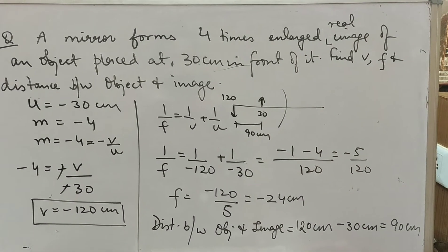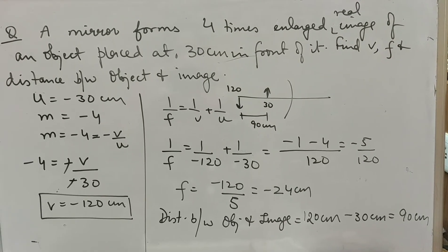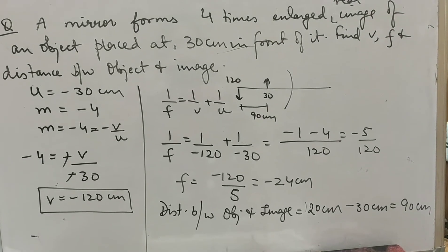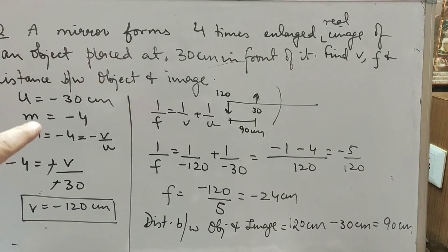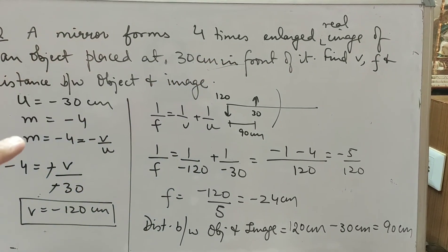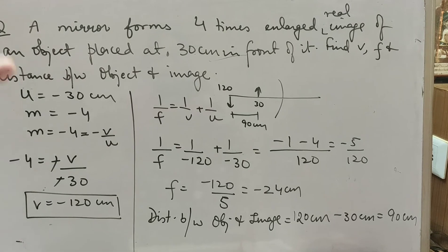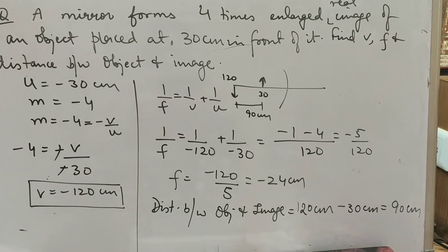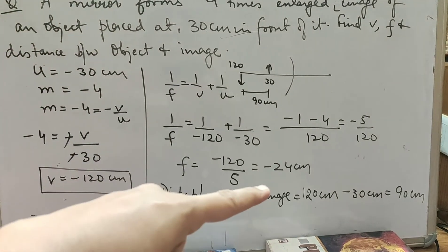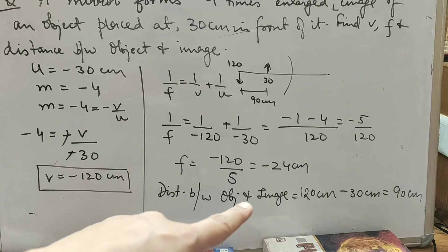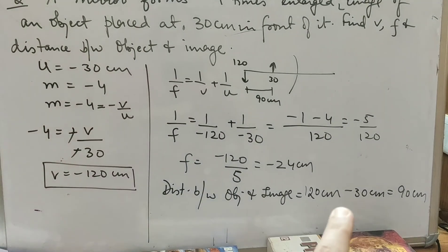Next: a mirror forms a 4 times enlarged real image of an object placed 30 cm in front. Find image distance, focal length, and distance between object and image. u = minus 30, m = minus 4 (real image). Using m = minus v/u, we get v = minus 120 cm. Putting u and v in the mirror formula gives focal length = minus 24 cm.